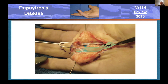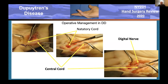Here you see a surgical case with cartoons showing the cord location, nerve locations, and flexor tendon location. Also involved are the natatory ligaments in the web. The nerves can be under them, over them, or sometimes the disease is on both sides.